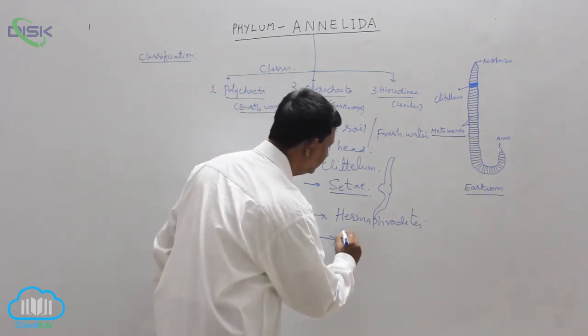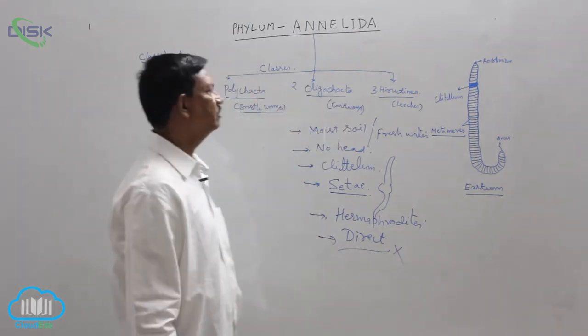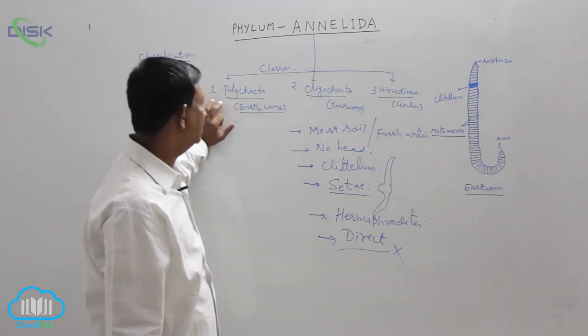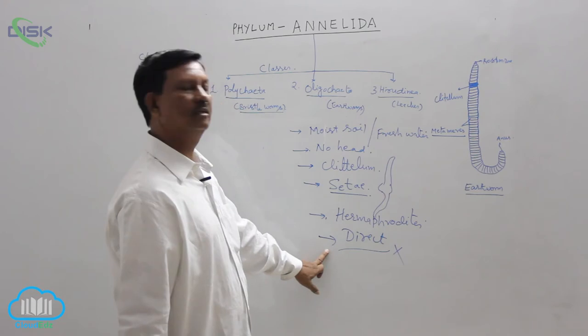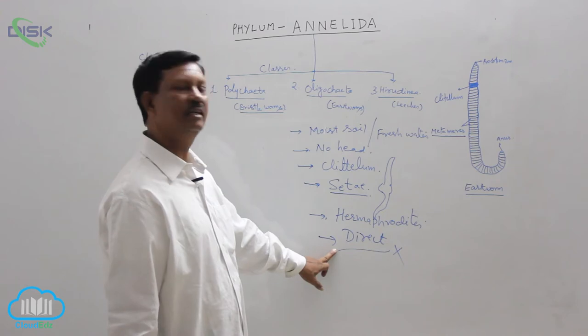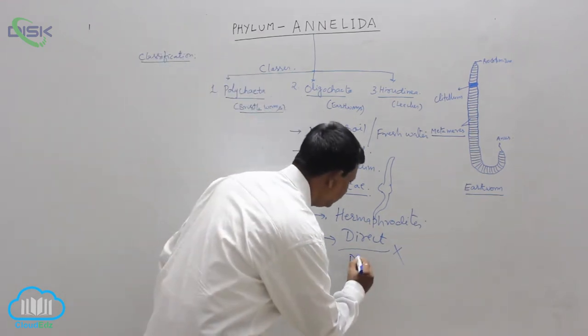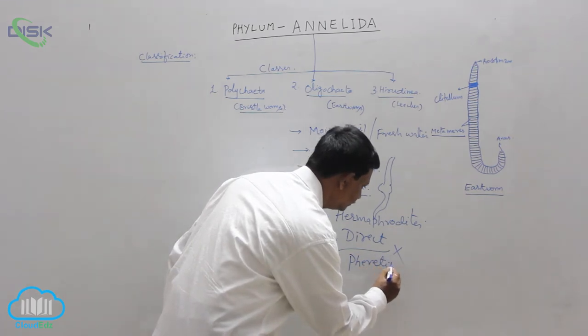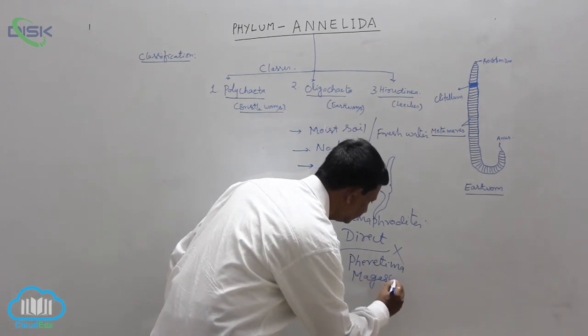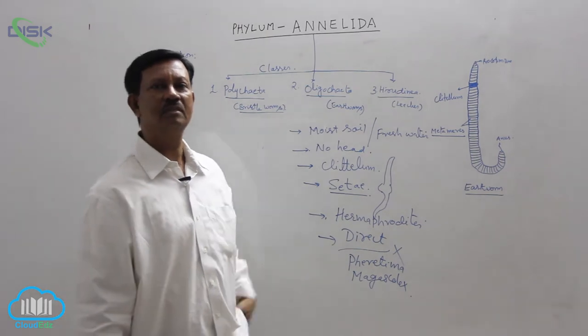Development is direct - there is no larval form. In Polychaeta, trochophore larva is present, hence the development is indirect. But here, the development does not contain any larval forms, hence it is known as direct development. The examples are Pheretima, Lumbricus. These two are commonly known as earthworms which are present in India.